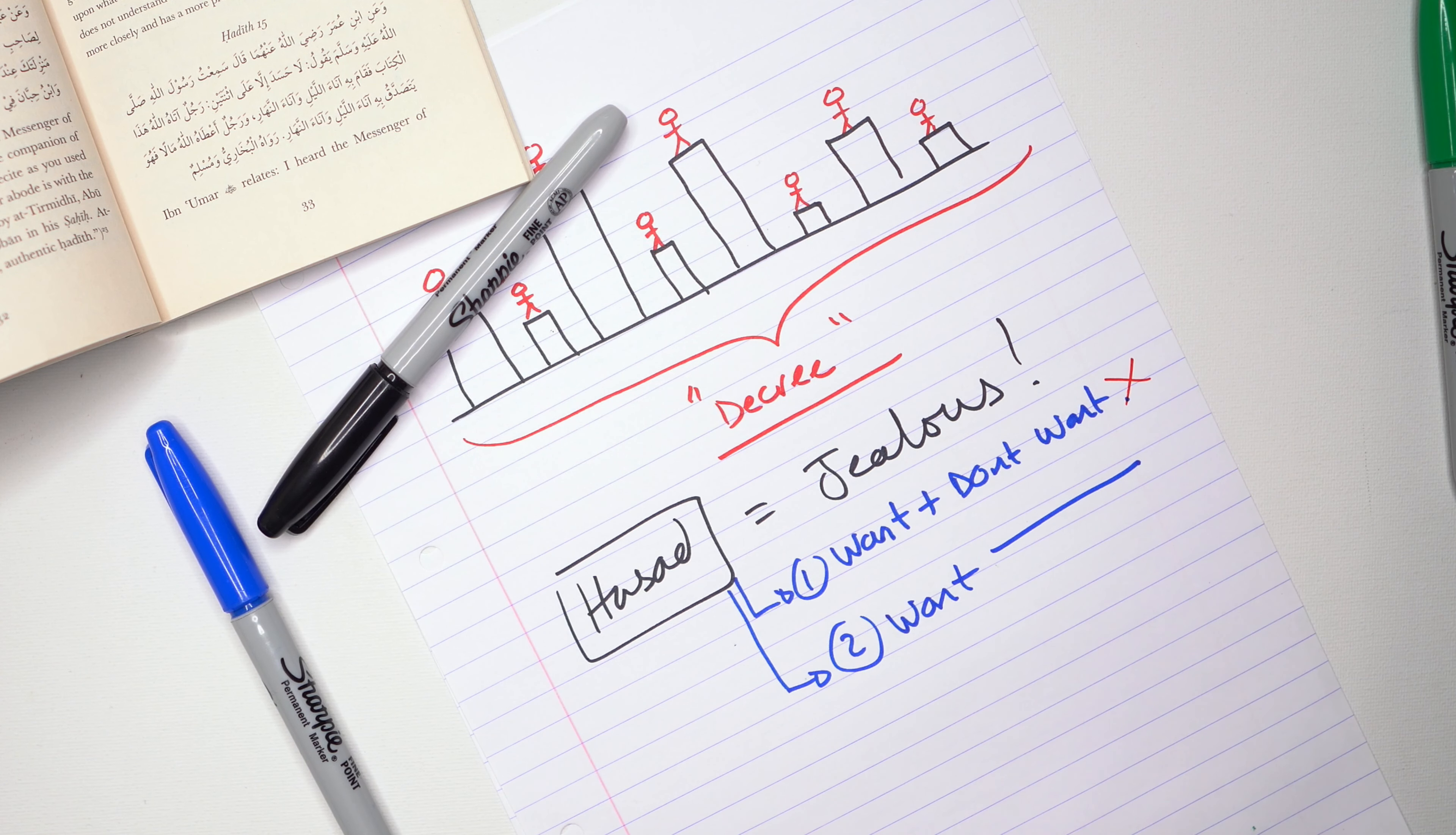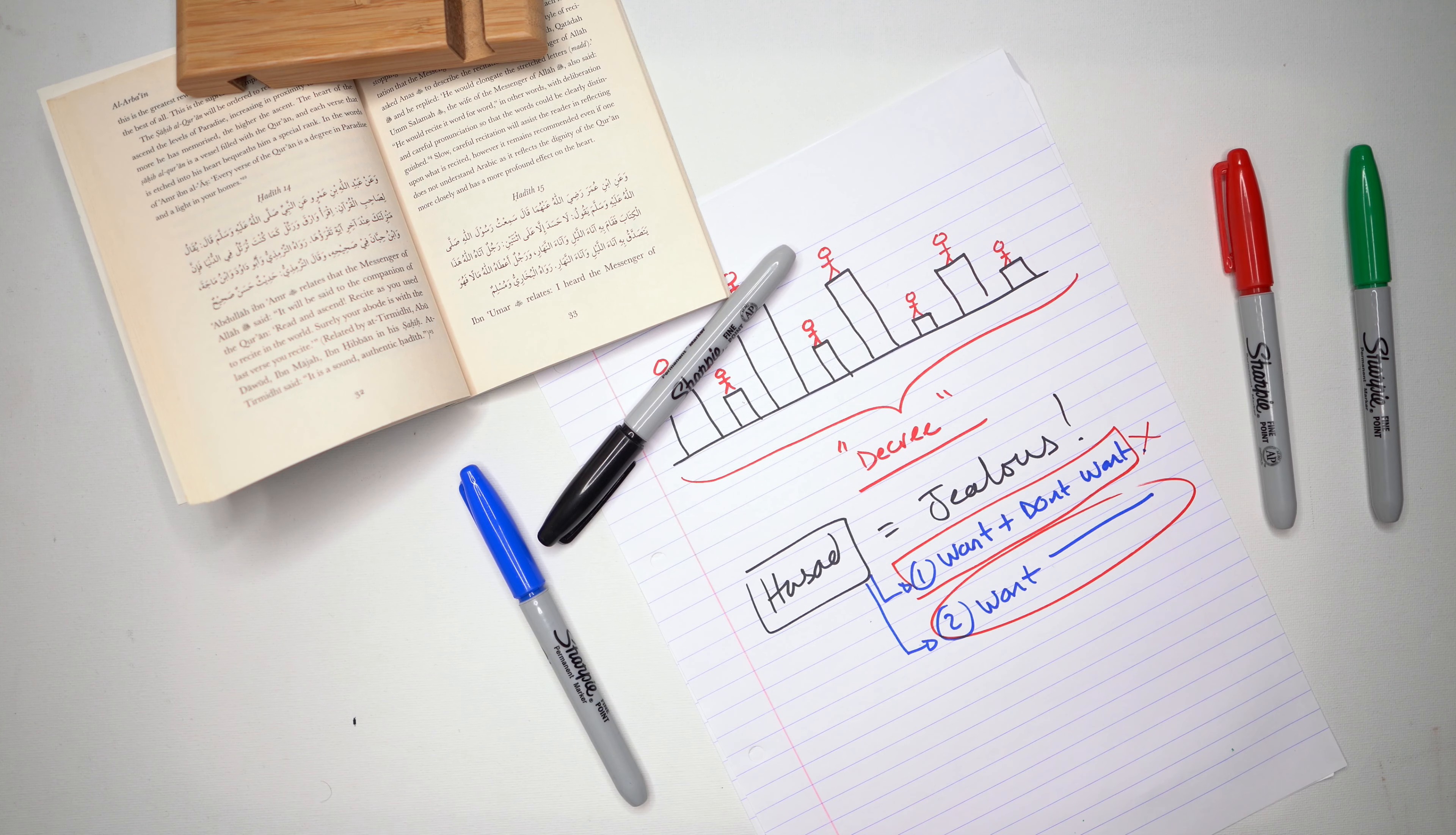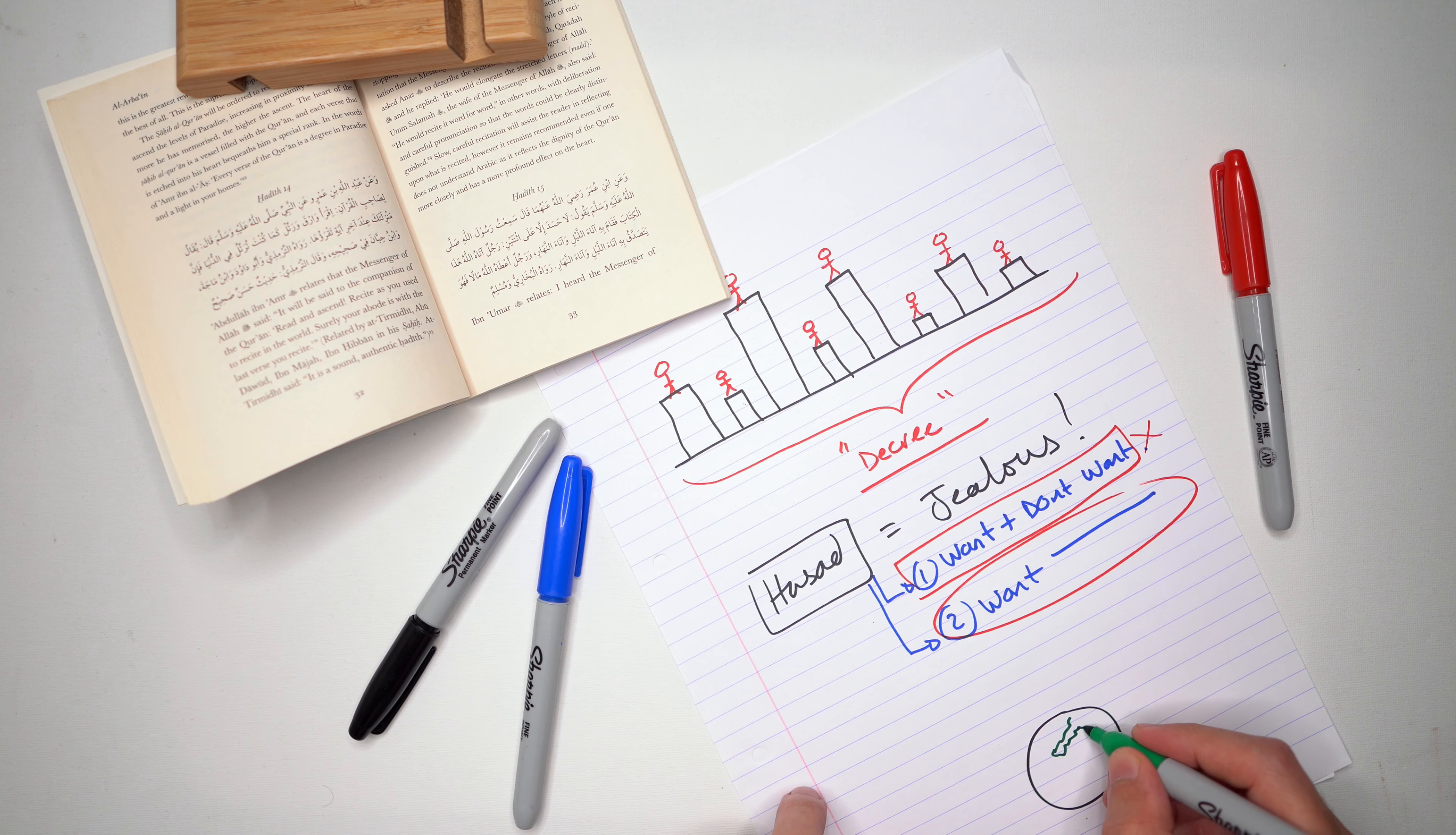There's a high level of jealousy and then there's a slightly lower level of jealousy. The high level of jealousy is where you want something and you don't want the other person to have it. So you want and you don't want. So let's say someone has a car, you want that car and you don't want them to have it.